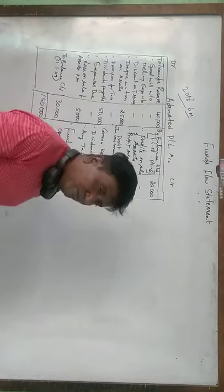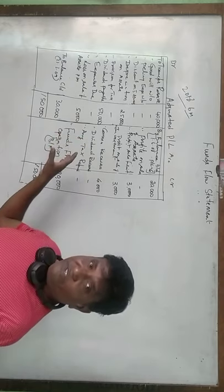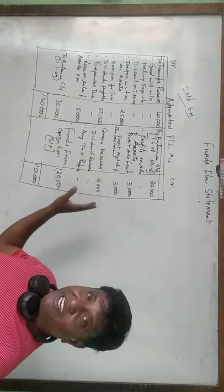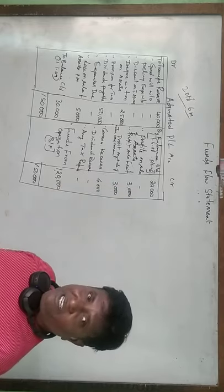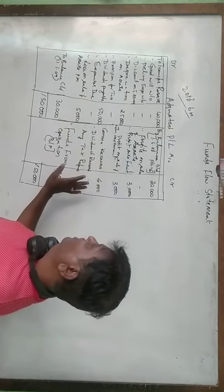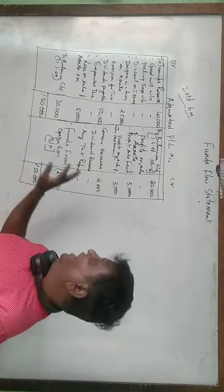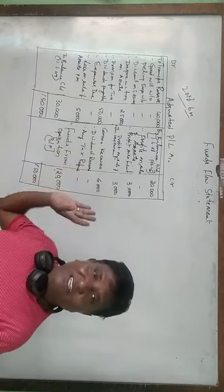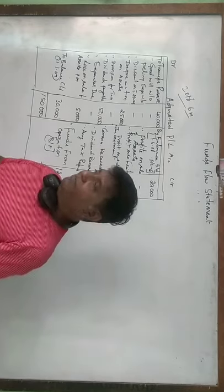Please don't forget to write this. I will leave it for another 10 seconds so that you can write. Write the format and understand it — identify what item is in the debit side and what item is in the credit side. Easily you will get 6 marks.